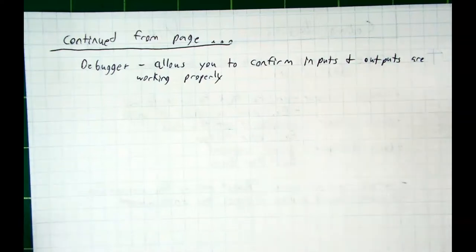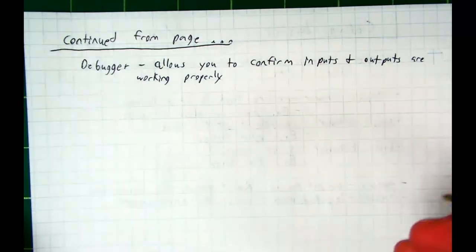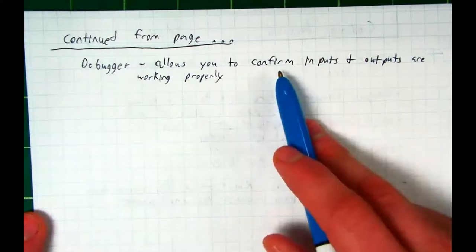So use your debugger window to test your motors and your sensors. If your motors and sensors are working in the debugger window, then you know it's not the motors and sensors. It has to be the code. Do you see how this helps you find bugs?